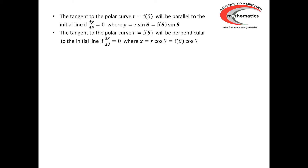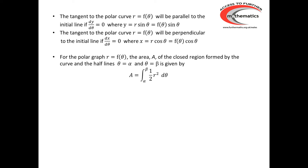The tangent to a polar curve will be parallel to the initial line if dy/dθ = 0, and it will be perpendicular to the initial line if dx/dθ = 0. The area formed by the curve r = f(θ) and the half lines θ = α and θ = β is given by the integral between α and β of ½r² dθ.